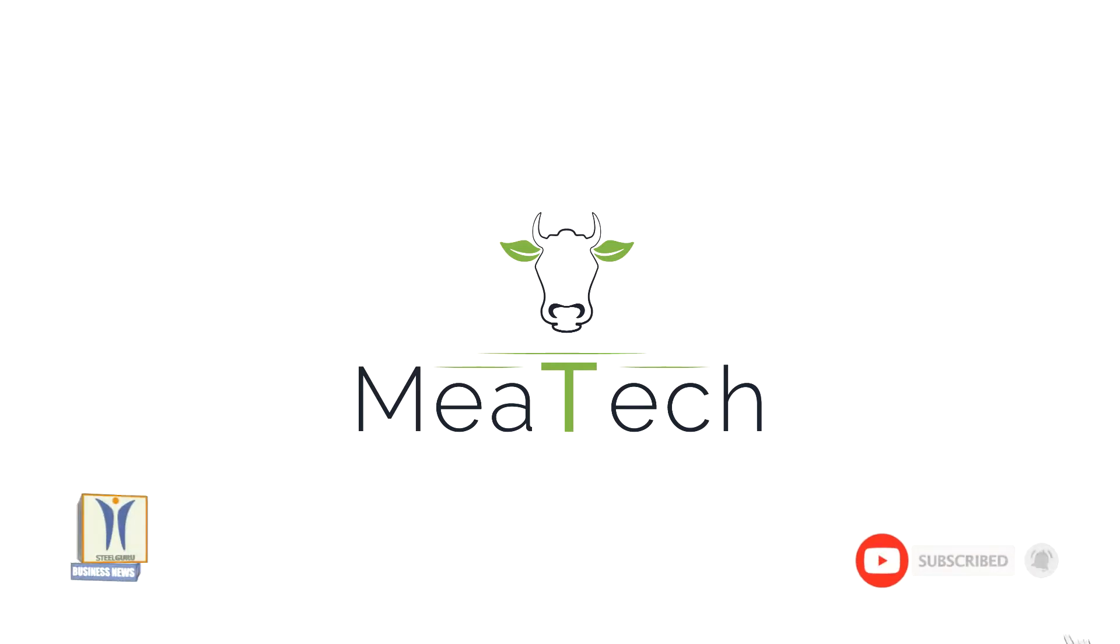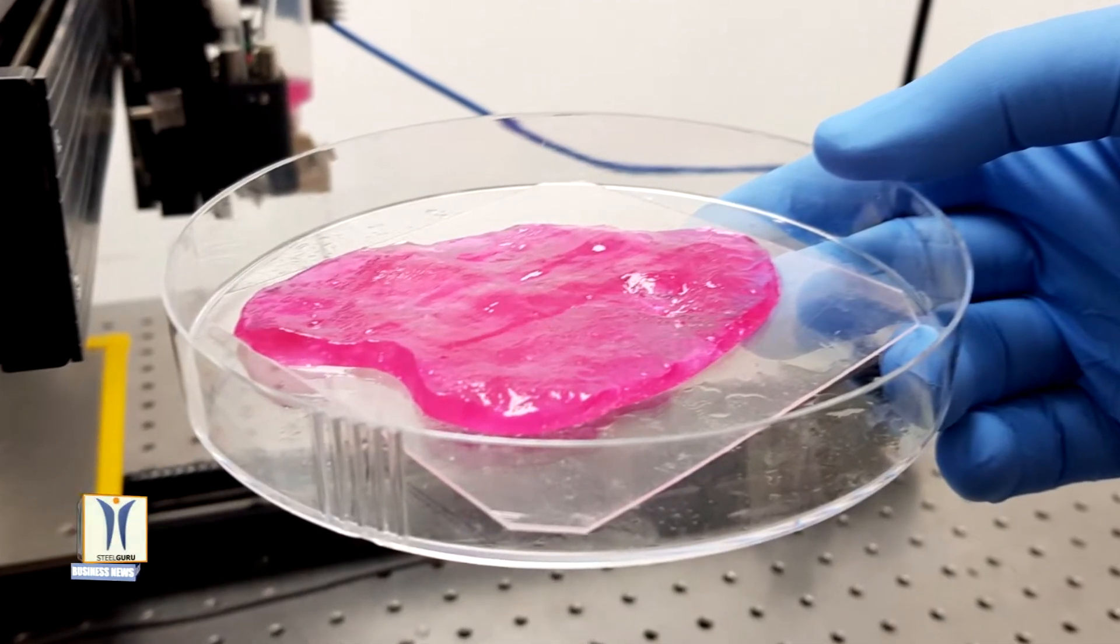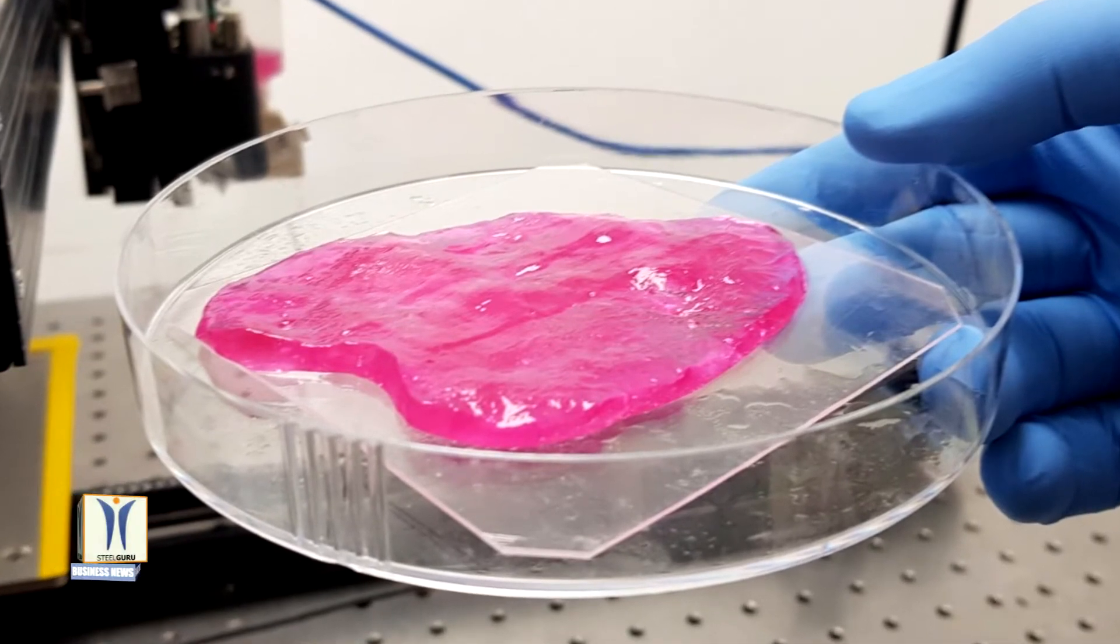Muscle cells are required for meat growth using three-dimensional printing technology. This technology aims to enable the production of meat directly instead of raising the entire animal and slaughtering it.